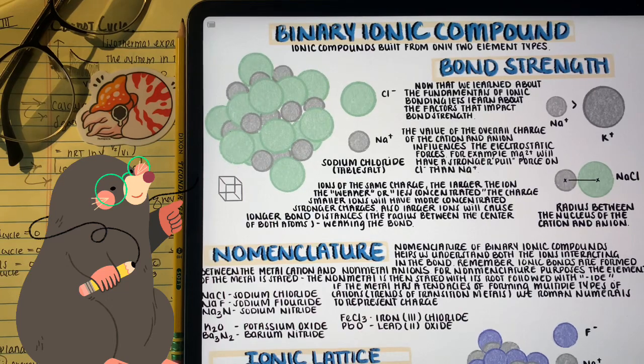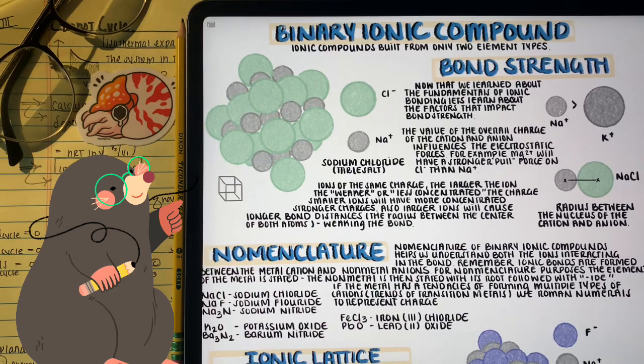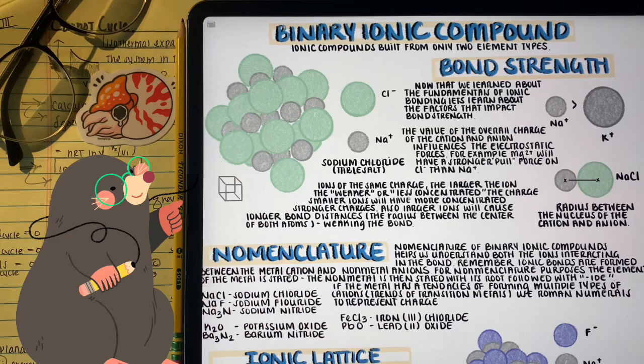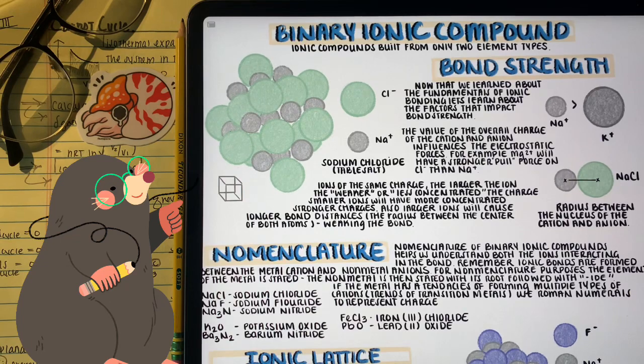In some cases, when we use transition metals, they have varying different ions that they can form. So, we use roman numerals to help represent the cation charge of the metal. So, for like iron-3-chloride, or lead-2-oxide.